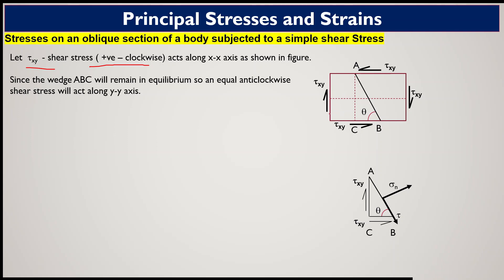Tau_xy is acting in the vertical direction along the x-axis. Since tau_xy has the possibility of rotating the body in the clockwise direction, we take it as a positive value of shear stress. We need to find the stresses developed due to shear stress tau_xy on plane AB, which has an angle of inclination theta with the horizontal (x-axis) direction.